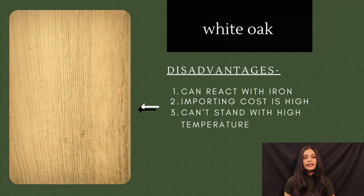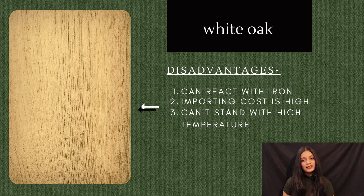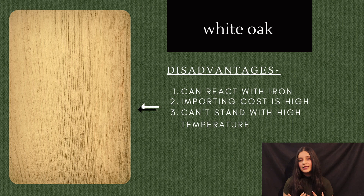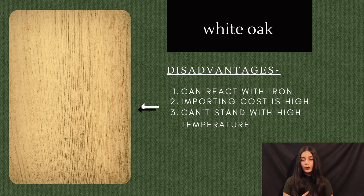Now let's talk about the disadvantages of white oak wood. First, it can react with iron, causing discoloration and stains — it can become dull, discolored, faded, and stained very easily. Second, the importing cost is high and expensive because it is not readily available in India and has to be bought from North America.